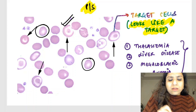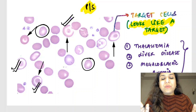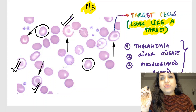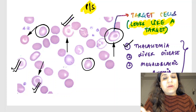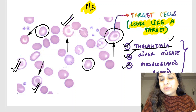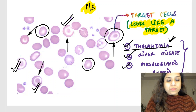Can you see these are the normal RBCs, but look at this cell — do you think this is a normal cell? It looks like a target, like from the game of darts. So these are called target cells, and they are seen in thalassemia, liver disease, or megaloblastic anemia. Thalassemia is one of the most common causes of target cells, and thalassemia will also show microcytic hypochromic RBCs — smaller and less color.